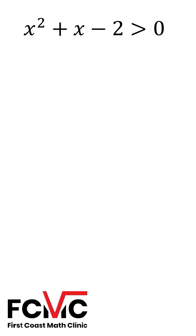This is written in standard form, so first we want to do is factor this trinomial. We know this factors to x plus 2 times x minus 1 is greater than 0.